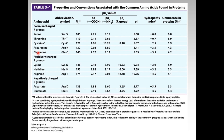Looking at the second part of the table — polar uncharged R groups and positively and negatively charged R groups. For one-letter abbreviations: serine is S, threonine is T — not tyrosine or tryptophan. Cysteine is C. Asparagine is N — not A. Glutamine is Q — not G. A is alanine and G is glycine. For positively charged R groups: lysine is K — not L. Histidine is H. Arginine is R — not A. For negatively charged amino acids: aspartate is D — not A. Glutamate is E — not G.